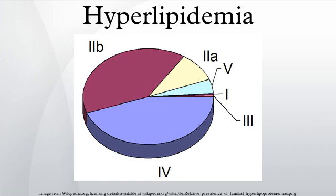Familial hyperlipidemias are classified according to the Fredrickson classification, which is based on the pattern of lipoproteins on electrophoresis or ultracentrifugation. It was later adopted by the World Health Organization. It does not directly account for HDL, and it does not distinguish among the different genes that may be partially responsible for some of these conditions.